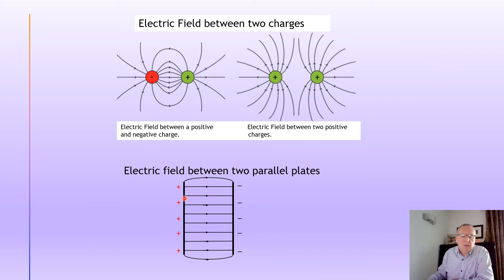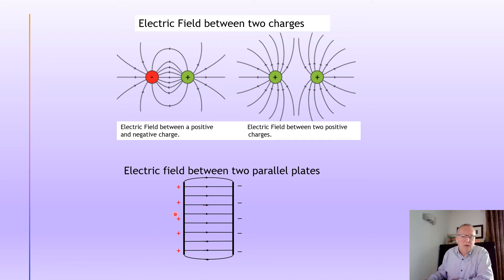The last pattern involves two parallel metal plates, and the electric field lines this time are equally spaced — they don't spread out, so the electric field is the same everywhere between the two plates. This is called a uniform electric field. Any charged particle between these two metal plates would experience a force, and this has consequences later on, specifically in Higher Physics. You need to be aware of this pattern and what it looks like.